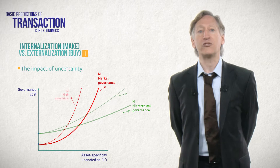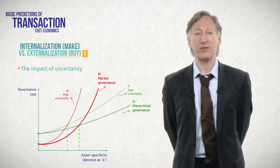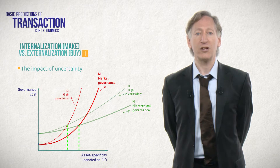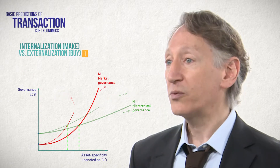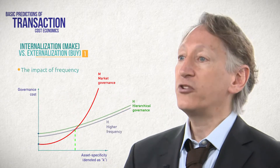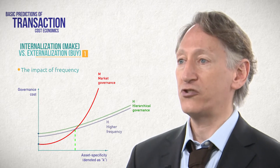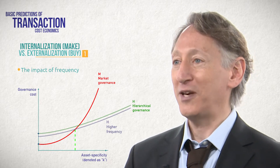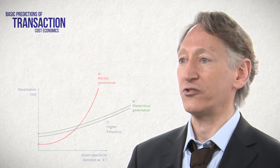Uncertainty exacerbates the impact of asset specificity, meaning that if we hold the level of asset specificity constant, the relative benefit of vertical integration versus market transactions increases as uncertainty increases. Frequency is predicted to make vertical integration more likely, simply because the high upfront fixed costs of vertical integration are cheaper on a per-occurrence basis if a transaction occurs many times instead of once.